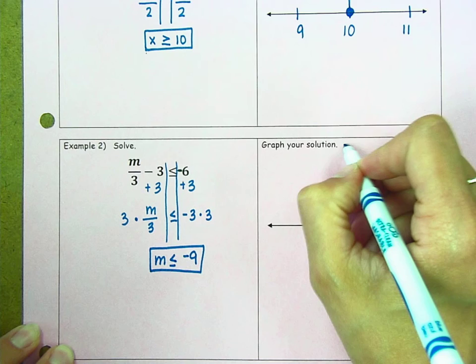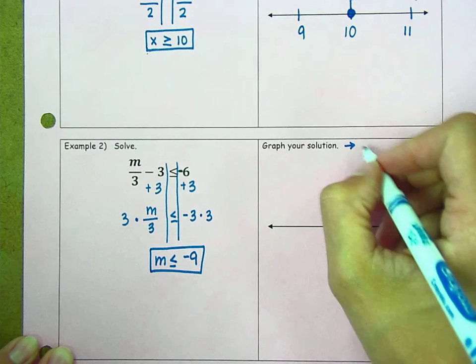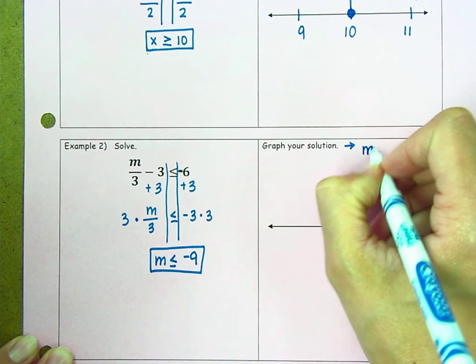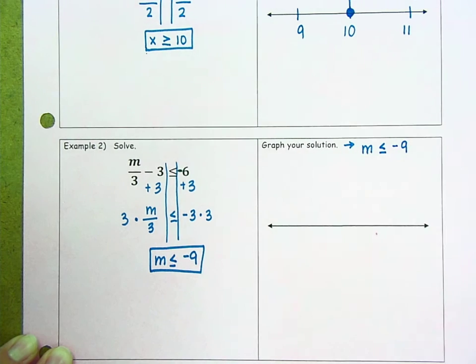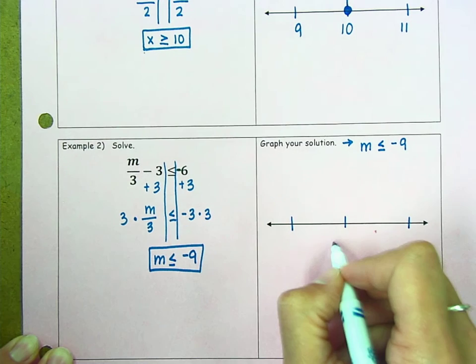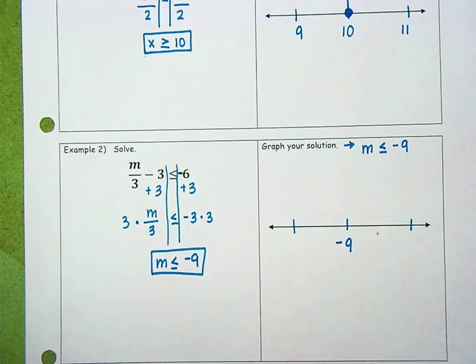Now we're going to graph our solution. And in this case, again, that solution is once we've isolated the variable or gotten that variable by itself. So our solution is m is less than or equal to negative 9. We're going to place our values on the number line. Especially when we have those negative numbers, we have to be careful that we're placing our values in the correct order.